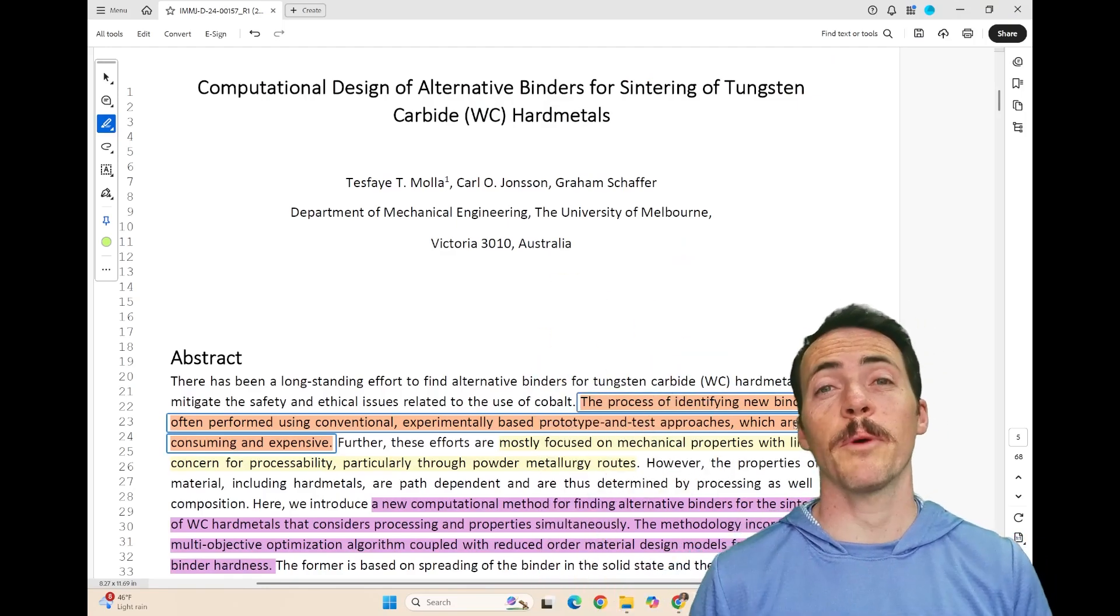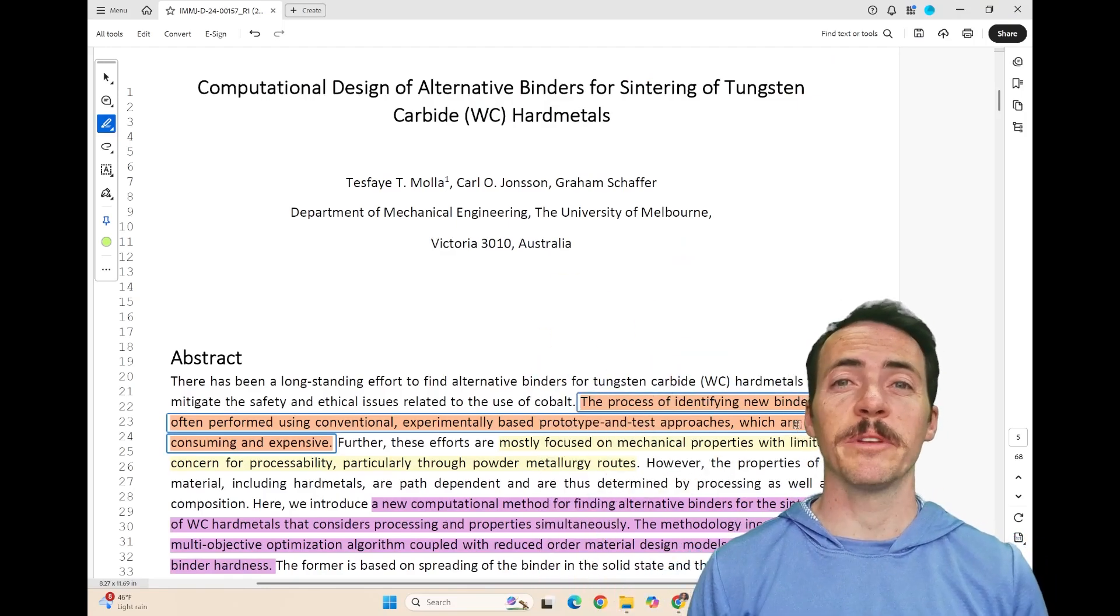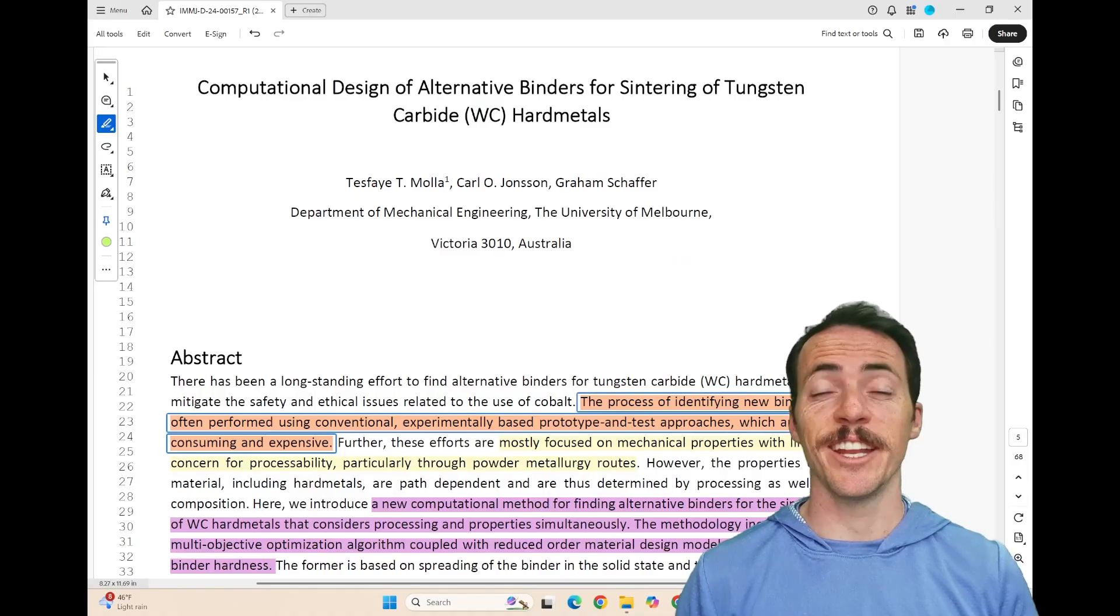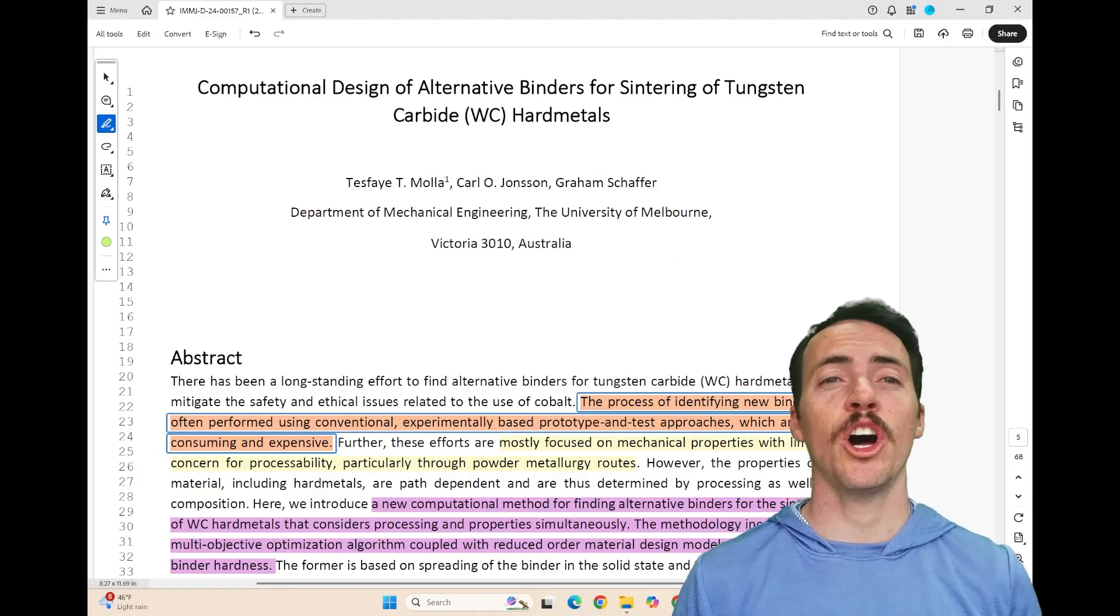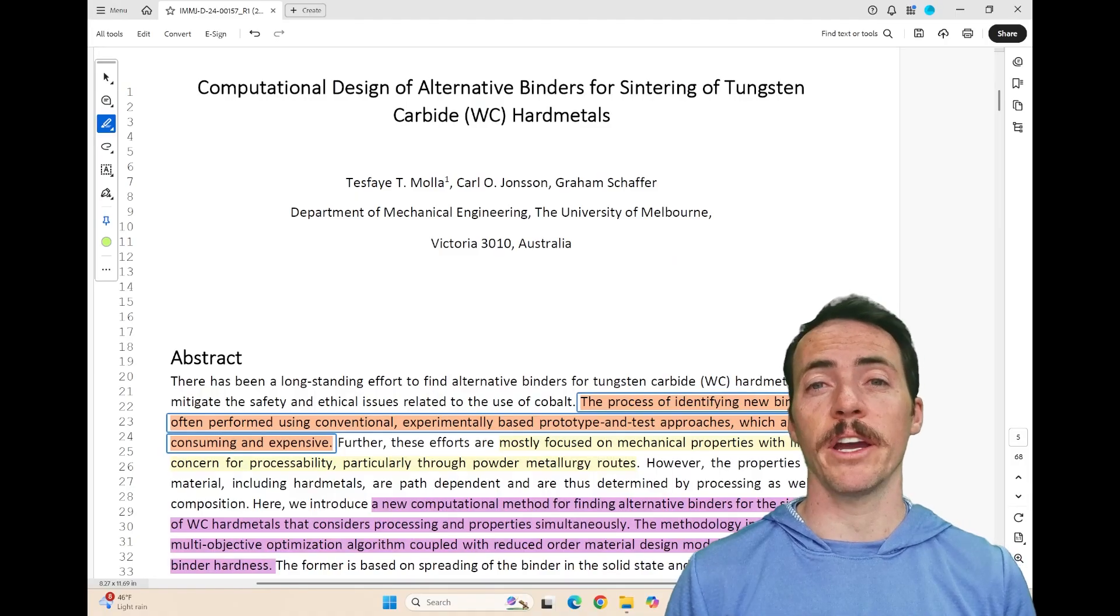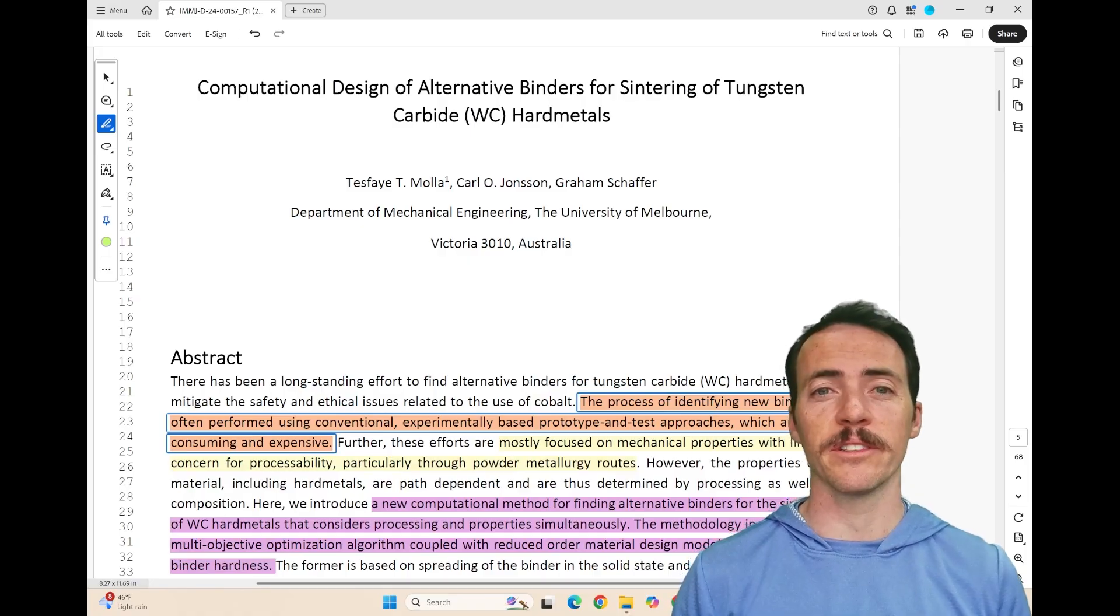Hey everybody, my name is Taylor Sparks and I'm the Editor-in-Chief at Integrating Materials in Manufacturing Innovation. Today, I'm here to talk about the paper, Computational Design of Alternative Binders for Sintering of Tungsten Carbide Hard Metals.